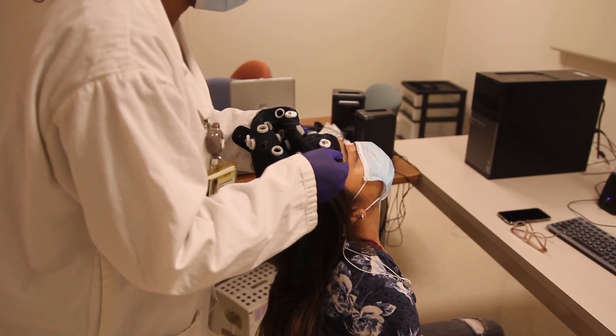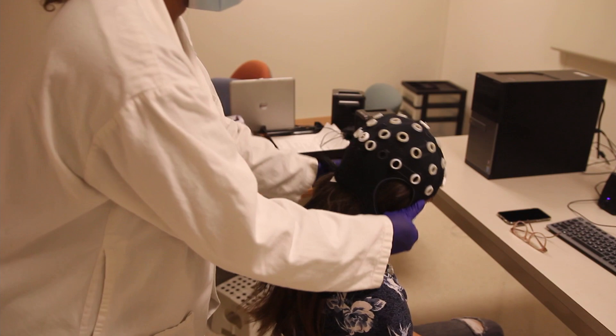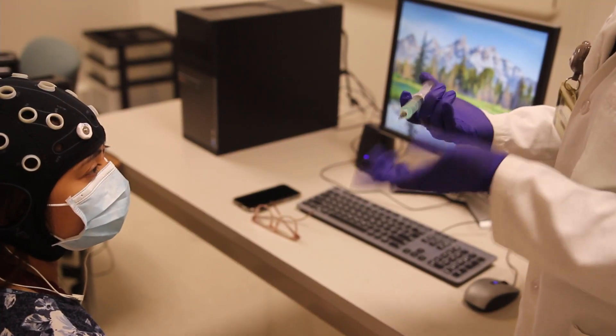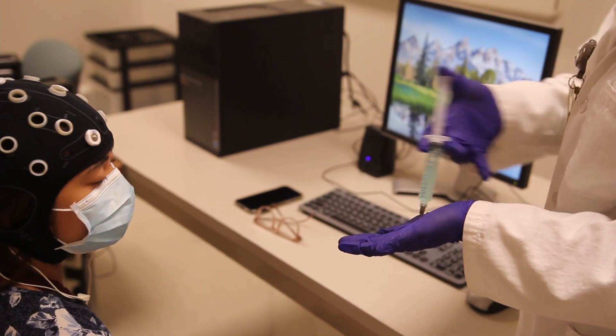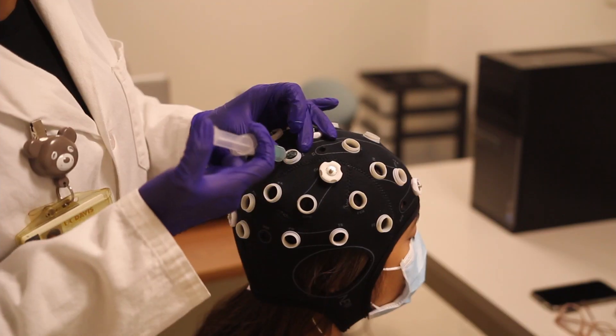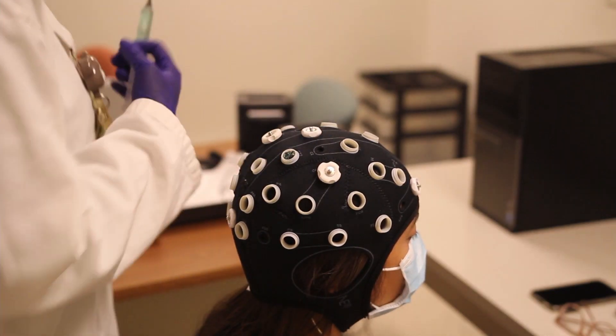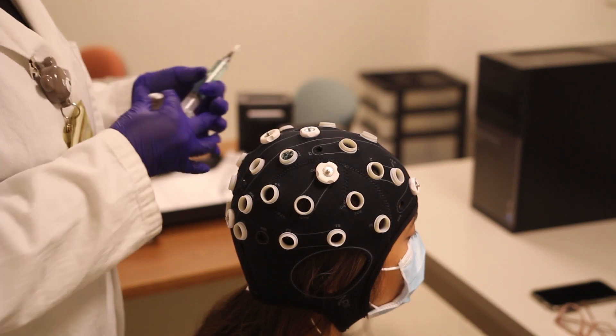Once the cap is placed on your head, we will fill each of the ports using a blunt-tipped applicator filled with water-based gel. When applying the gel, we will use a circular motion to make sure the gel is applied directly to your scalp, and then once filled, we will place the sensors on the cap.